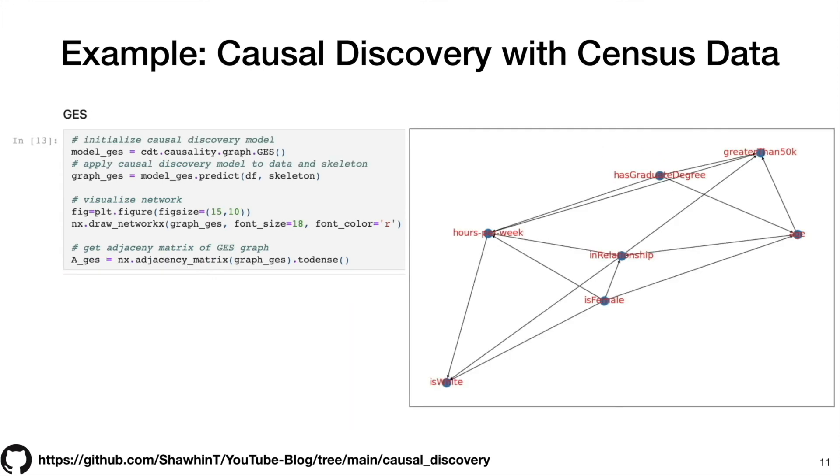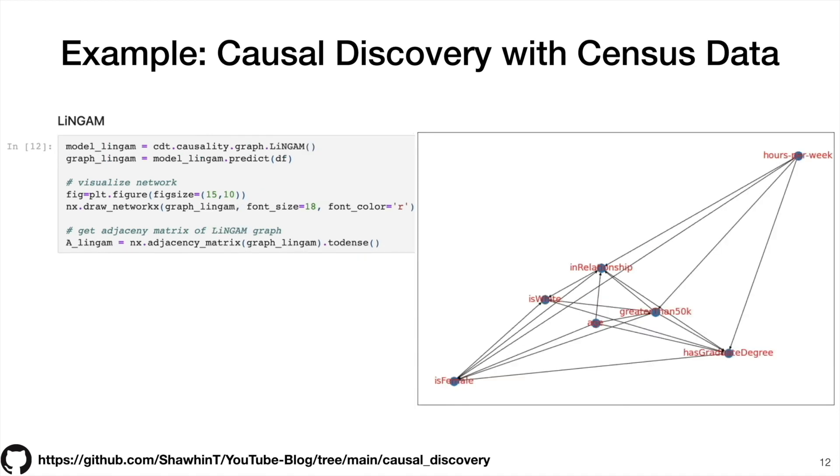So the next algorithm that we try out is the greedy equivalent search algorithm, which uses trick number two, greedy search of the DAG space. And this gives us a causal graph that is somewhat similar to what the PC algorithm gave us. Notably that edge between hours per week and is white. The symmetry is broken, so it's not a bi-directed edge. And then finally, we use the Lingam algorithm. And this one doesn't really give us something sensible. It's basically everything is causing has graduate degree. So whether you make more than $50,000 impacts your graduate degree. How many hours per week you work has an impact on your graduate degree. And these edges seem backwards. This algorithm doesn't seem to do a great job, and that's because it's assuming linear relationships between variables. And since most of these variables are Boolean, that's not something that necessarily makes sense.